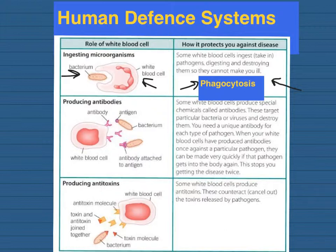The other way is by producing antibodies. Antibodies are produced by some white blood cells and fix onto the bacteria — attached to antigens — and they stick them together, which kills the bacteria. The last method is producing antitoxins, which counteract or cancel out the toxins released by pathogens, particularly bacteria.